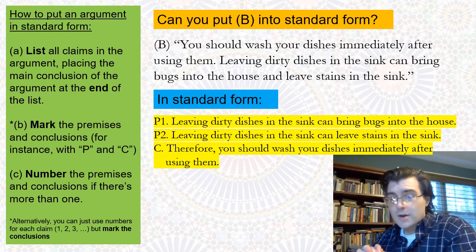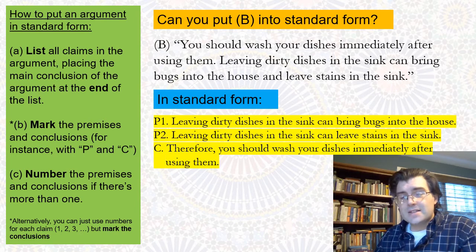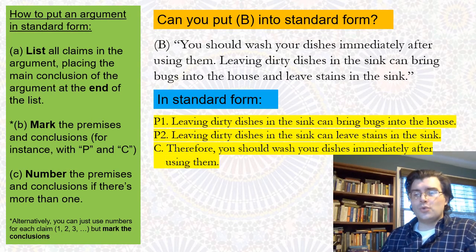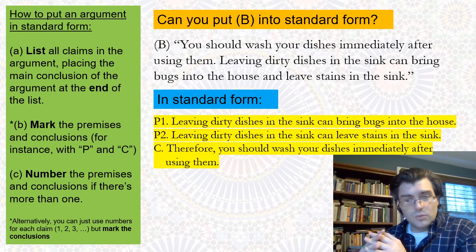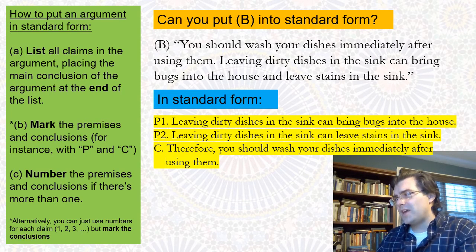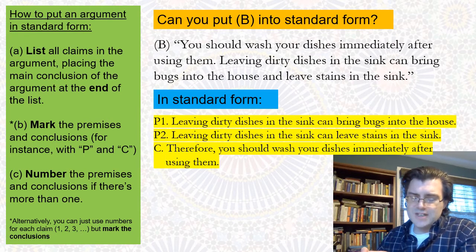The second point: notice that the conclusion is stated first in the passage. The conclusion of an argument can be stated anywhere — at the beginning, the end, or the middle. You cannot rely on the ordering of sentences in the original passage to tell you which sentences express premises and which express conclusions. You need to think about the justificatory structure — which claims are being offered as justification or evidence for other claims. That's the question to ask when identifying premises versus conclusions.